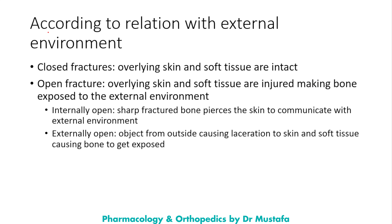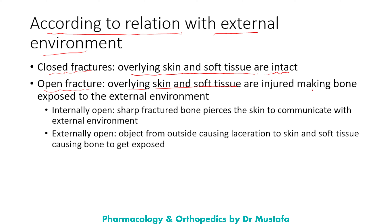Types of fractures according to relation with external environment: we have closed fractures and open fractures. In closed fractures, the overlying skin and soft tissue are intact. In open fractures, the overlying skin and soft tissue are injured, so the fracture communicates with the external environment and the bone is exposed. Open fractures are further divided into internally opened and externally opened.